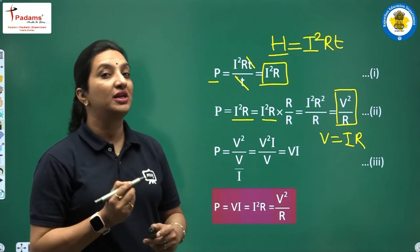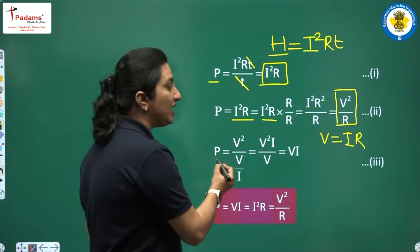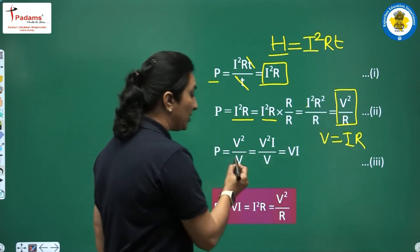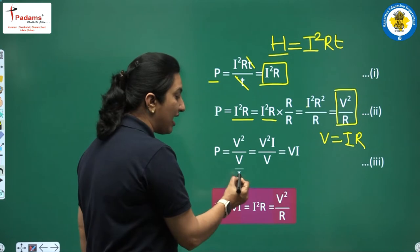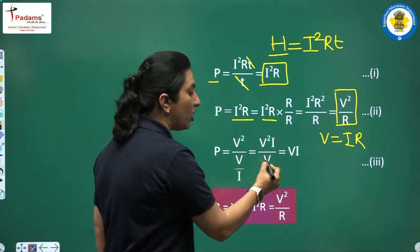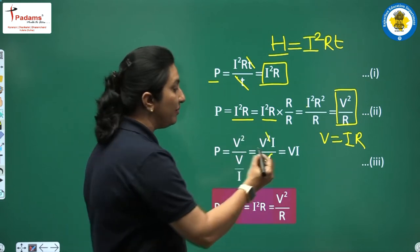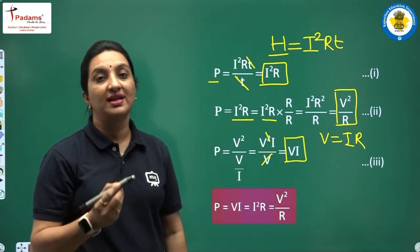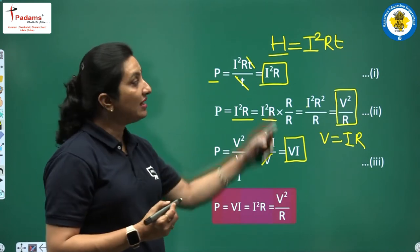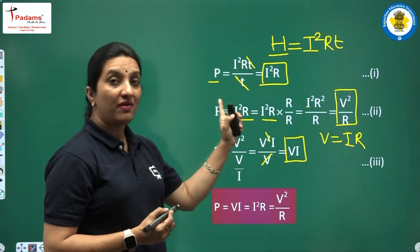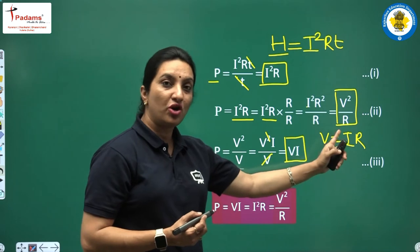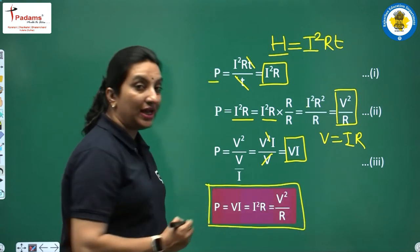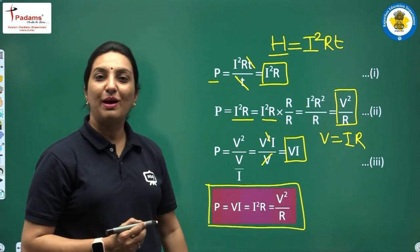We have one more form in which power can be expressed. In place of R, from Ohm's law we can write V/I. So substituting, we get V² divided by (V/I), which simplifies to VI. Therefore, the electrical power W/T can be written in three ways: I²R, V²/R, and VI.